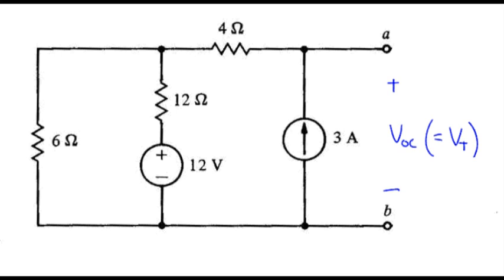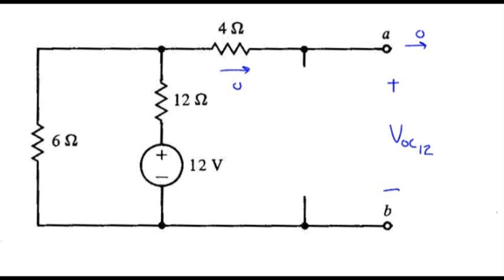And the first circuit will be based on the 12 volt source being active. So that means we need to set the current source to zero, effectively open circuiting that. So call this VOC subscript 12, saying that's the contribution due to the 12 volt source. Since we've got zero current there, it means we've got zero current through the 4 ohm resistor, zero volts across, means we can replace that by a short.